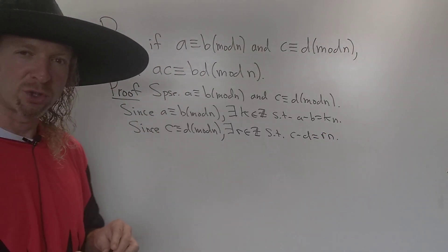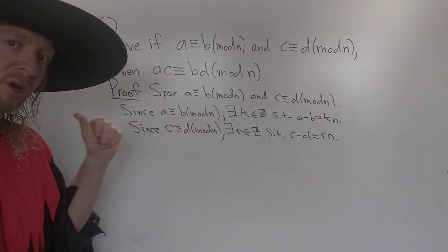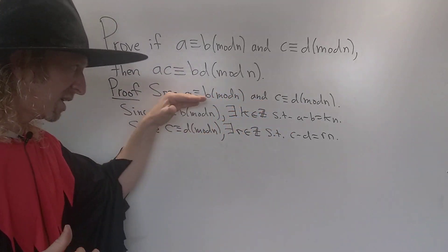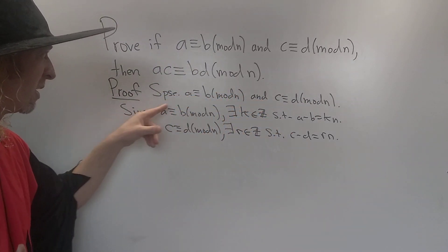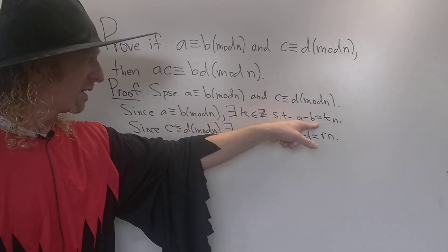All right, so again, what have we done and what are we trying to do? So we're trying to prove that if both of these conditions are true, then this is true. So we start the proof by assuming this. We did that here. Then we took it a step further and we wrote down what these things actually meant. So I broke it up into two steps. So A congruent to B modulo N. That means A minus B is a multiple of N. That's exactly what that means.